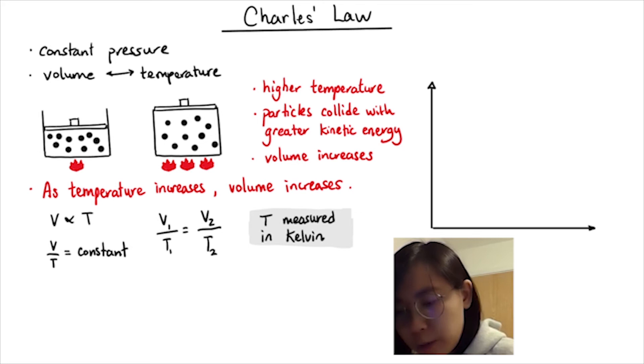The graph of volume against temperature is linear. If I want to maintain a higher constant pressure for the same temperature as before, I need to squeeze the gas particles tighter together. So I need a smaller volume.